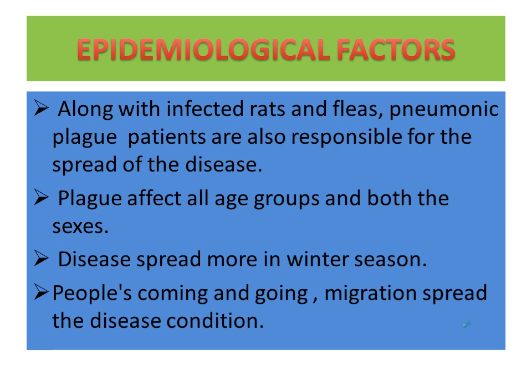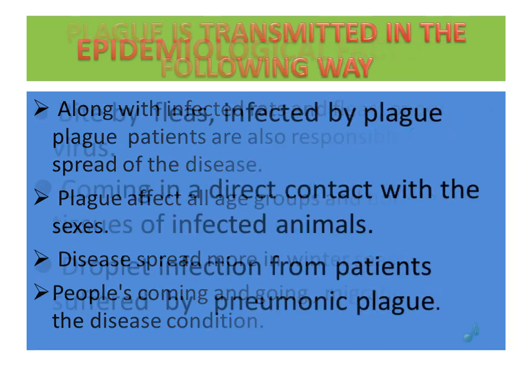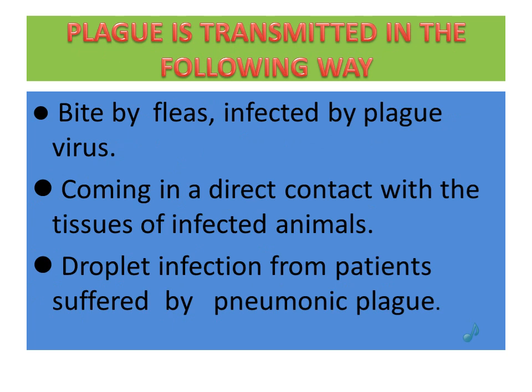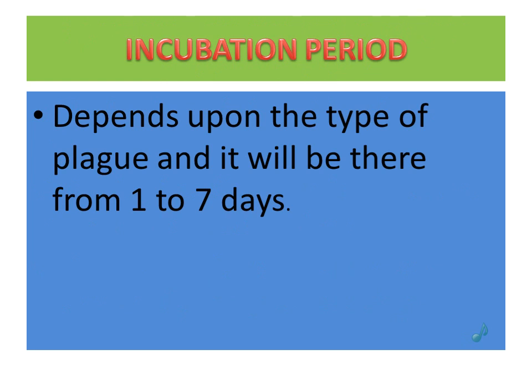Pneumonic plague patients are also responsible for the spread of disease. Plague affects all age groups and both sexes. The disease spreads more in winter season. People coming and going — migration — spreads the disease. Plague is transmitted in the following ways: bite of fleas infected by plague bacteria, direct contact with the tissue of an infected animal, and droplet infection from patients suffering from pneumonic plague.